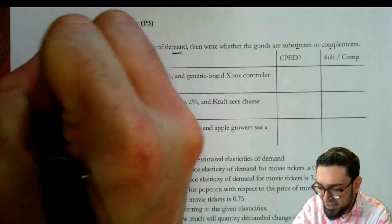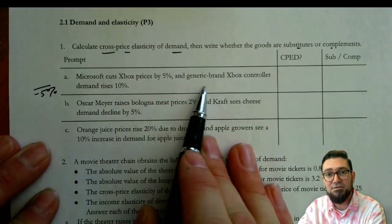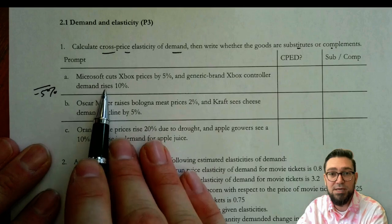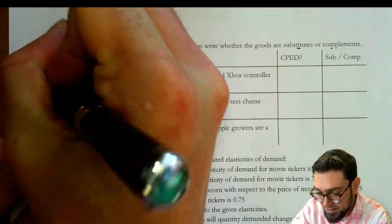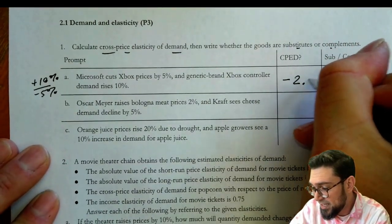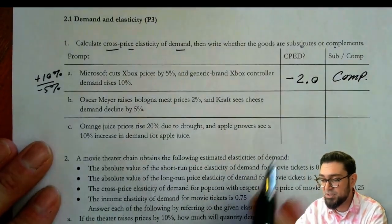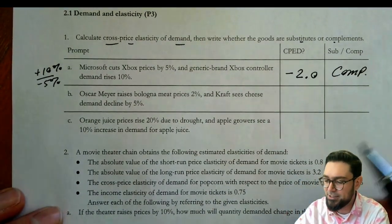Xbox prices go down by 5%. And here the positives and negatives do matter. So we're going to say negative 5. And Xbox controller demand rises by 10%. And so we would say we have a negative 2 value here. And the negative value tells us that they are complements. The size of the number actually in these doesn't matter as much.